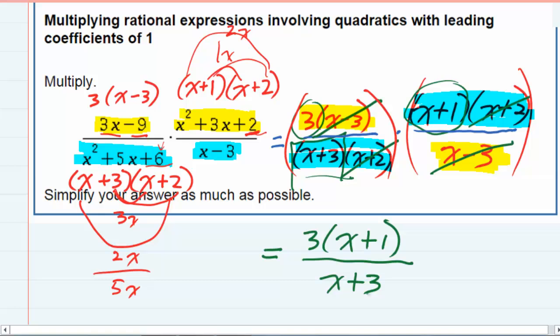So nothing else to cancel. We've multiplied and simplified. You could distribute that 3 in the top, but that's not necessary. Nothing will cancel. So we can leave it in this form.